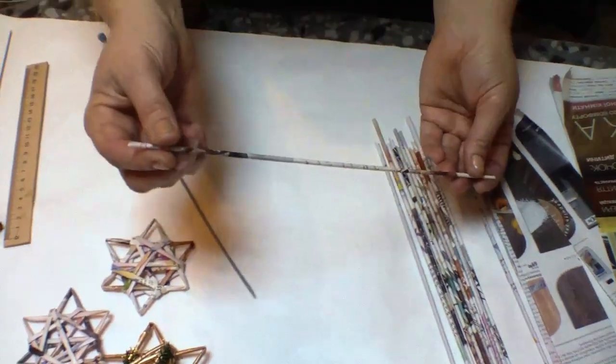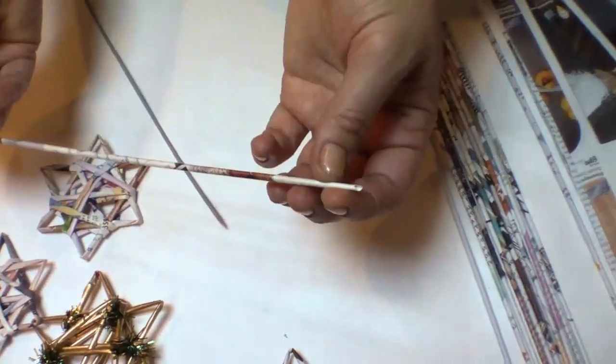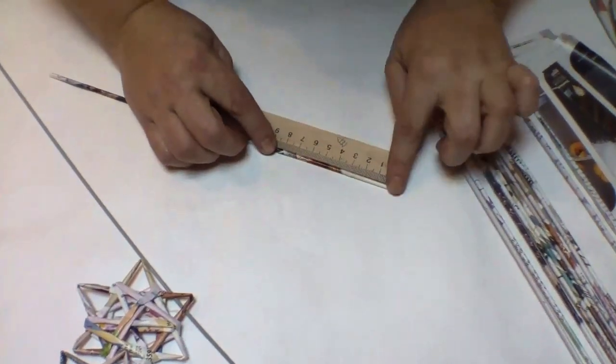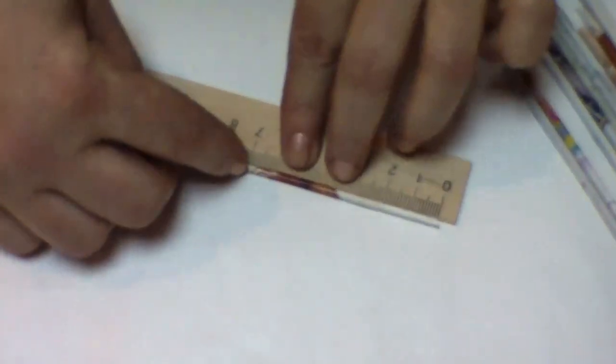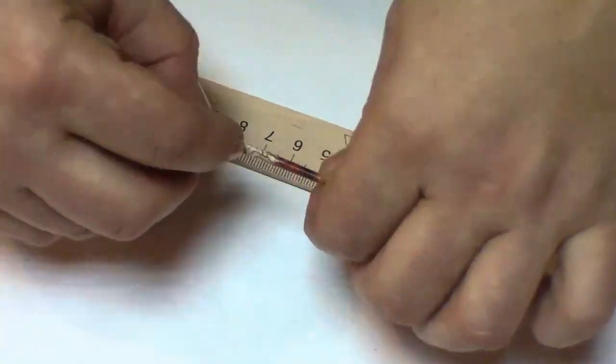The matter is that tubes have to be rather rigid and to have a thicker and a thinner side. It is very important. Then I mark 7 cm from a thinner side.